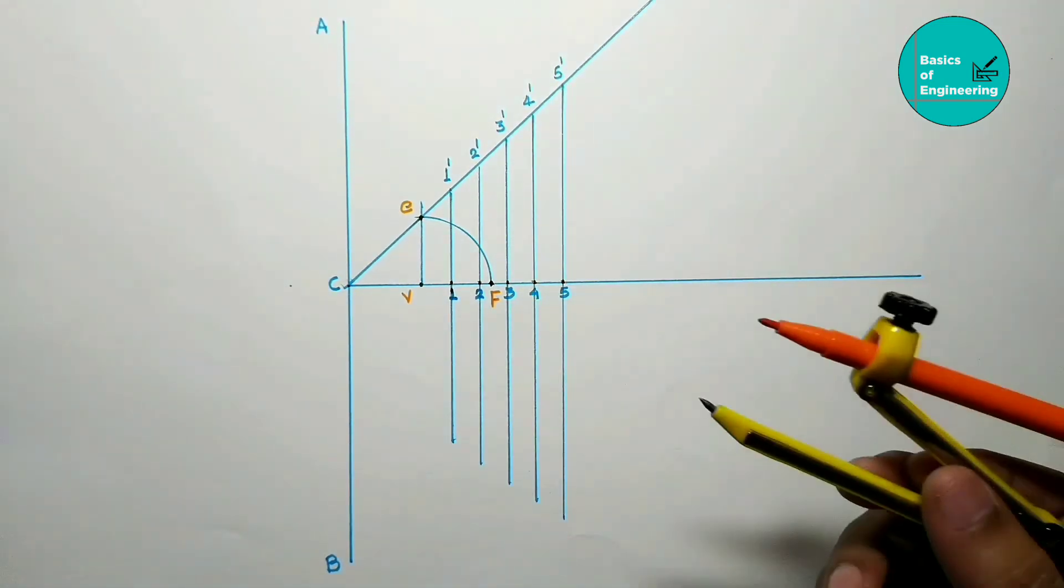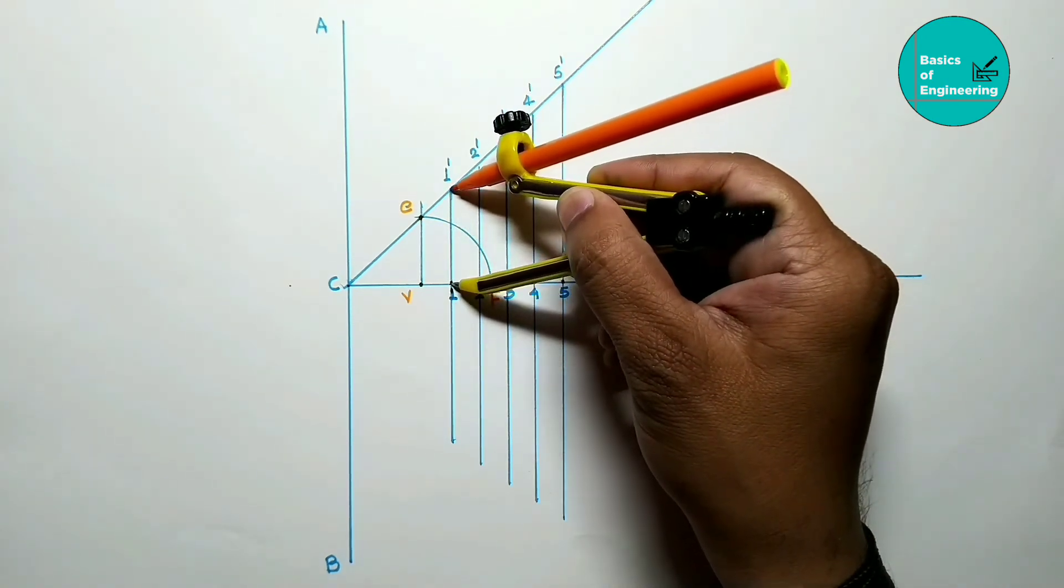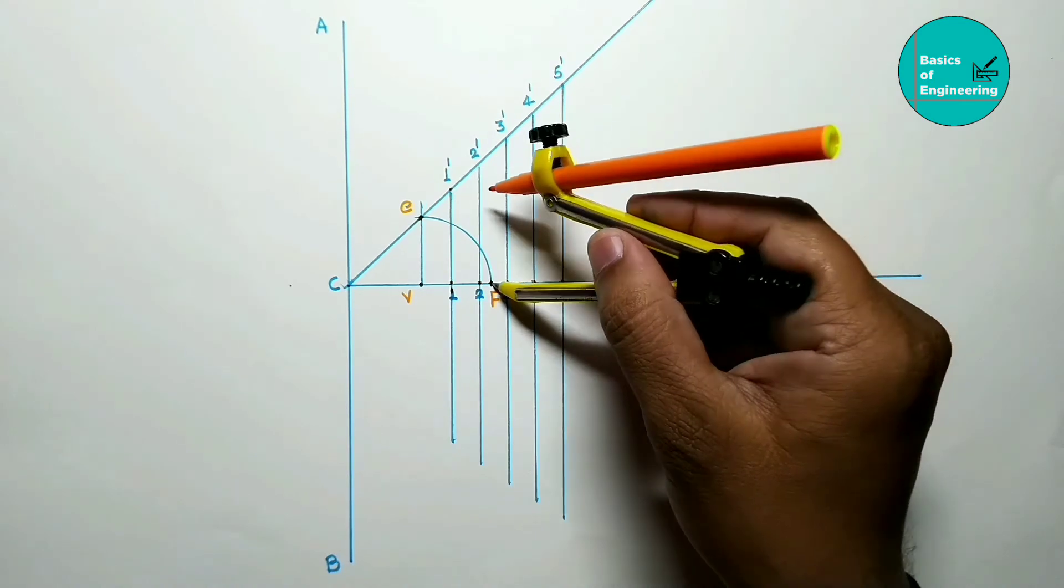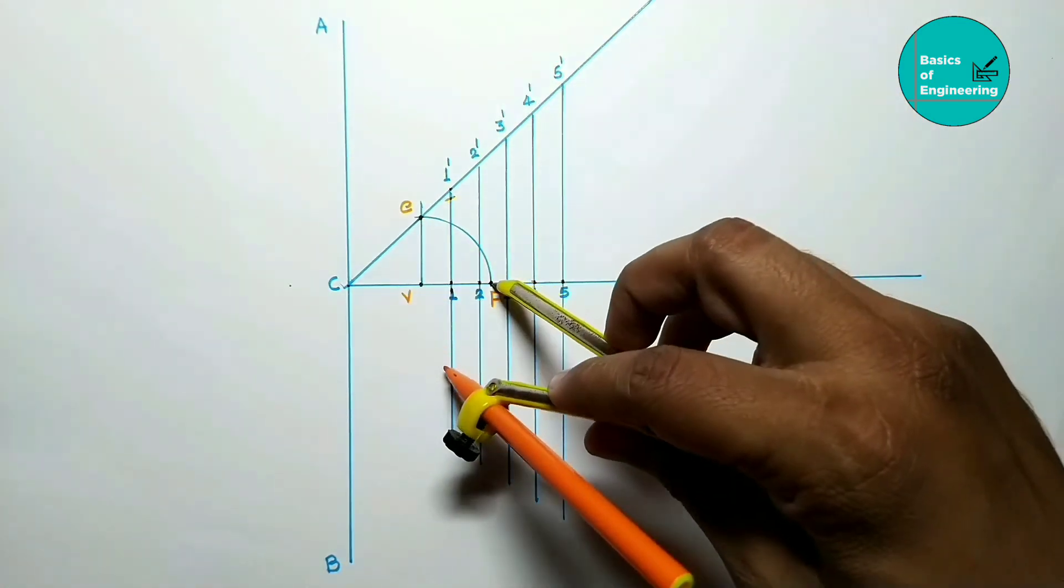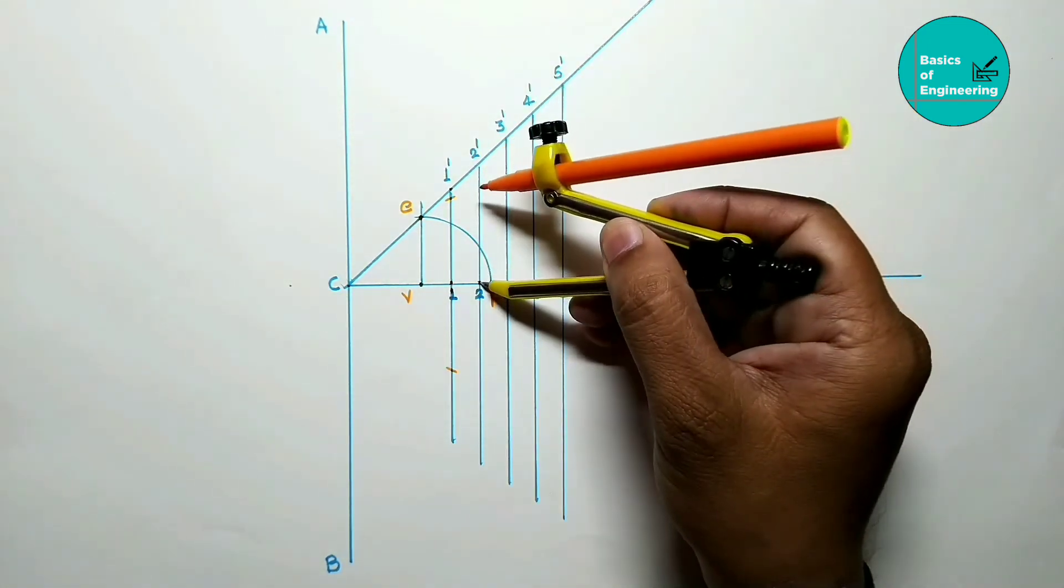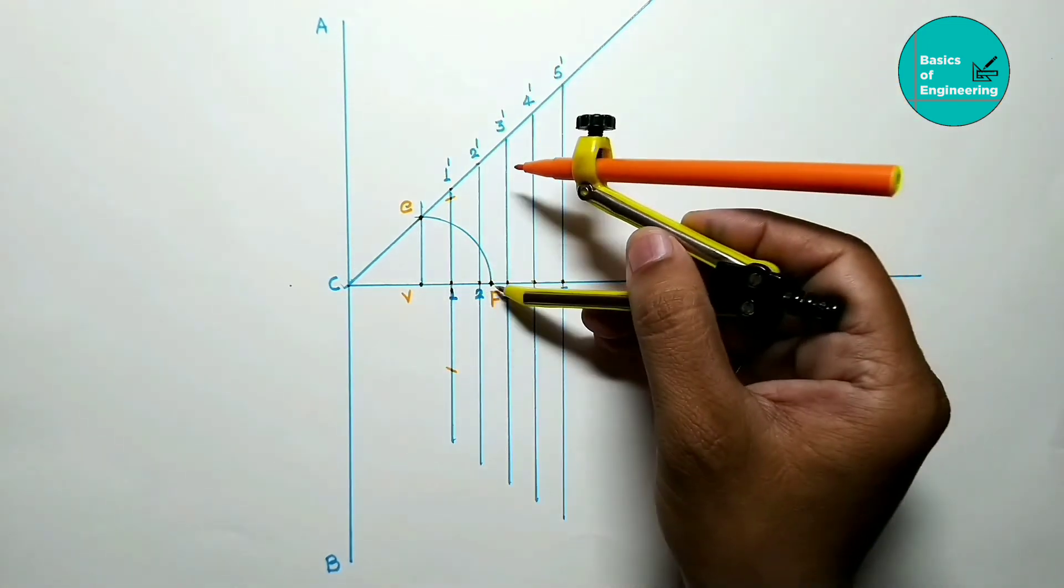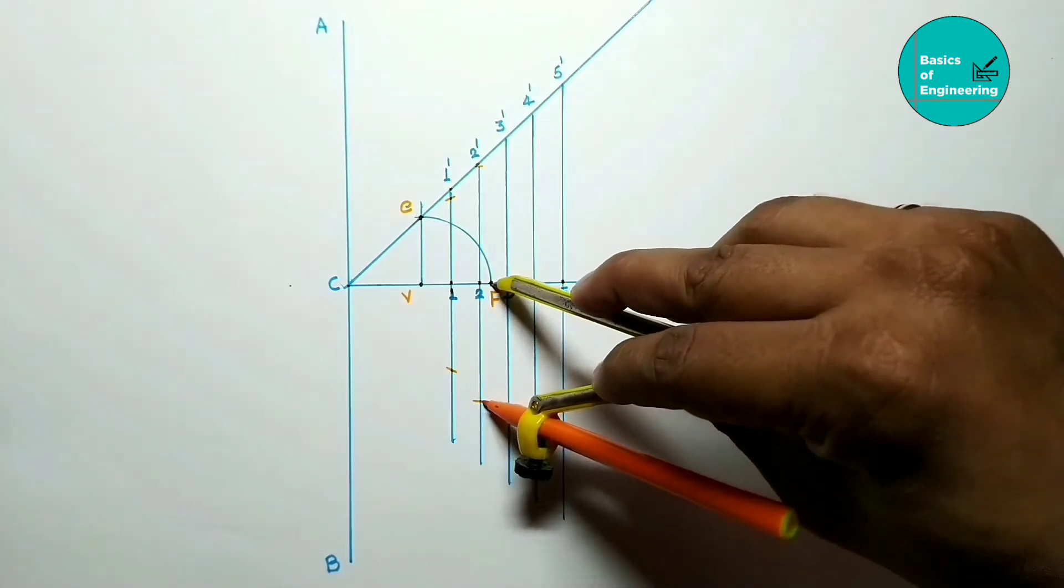Then take the compass. Take the distance 1 to 1 dash, F as center, mark the arc—one on upside, one on downside. Take the distance 2 to 2 dash, F as center, one arc on upside, one arc on downside.